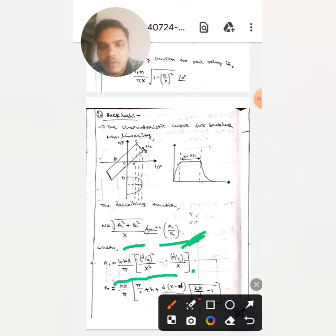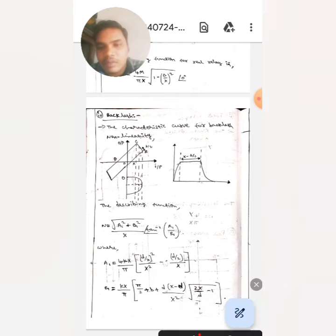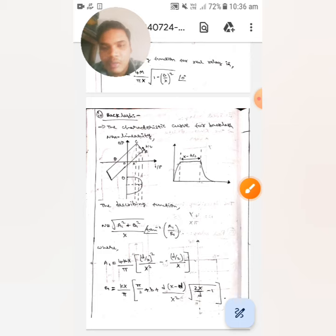Minus d by 2 by x, whereas b1 is kx by pi into pi by 2 plus b into b plus d into x minus d divided by whole square into root over 2x by d minus 1.